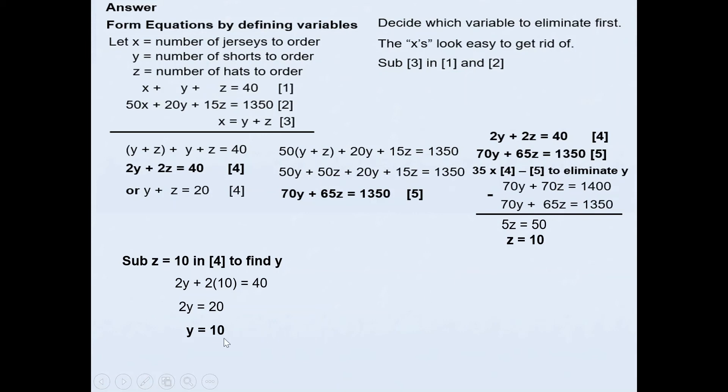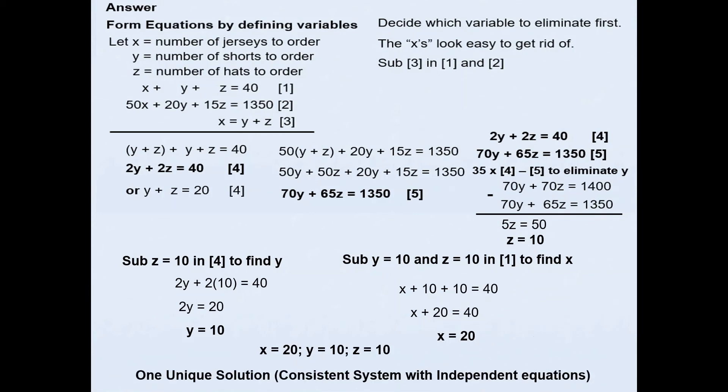Next we'll substitute z = 10 and y = 10 in the first equation to solve for x. That gives you x = 20. So x = 20, y = 10, and z = 10. This gives you one unique solution which means the system is consistent with independent equations.